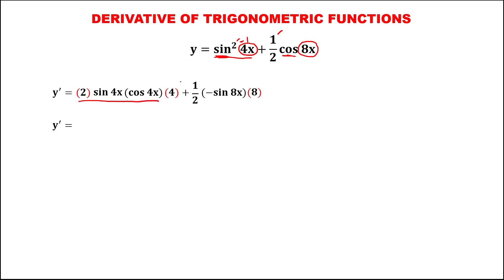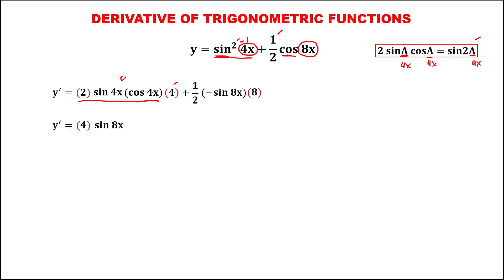There is an identity — bring down this four first, and using the double-angle identity for sine: two sine A cosine A equals sine two A. So A is equal to four x, and from this identity that equals sine two A, but A equals four x, so this is equal to sine eight x — two times four is eight x. Then minus: because we have positive times negative, so we have negative, and this one-half times eight, divide by two, that's four, so we have four sine eight x.